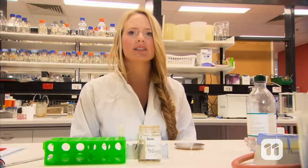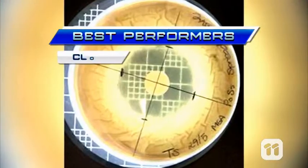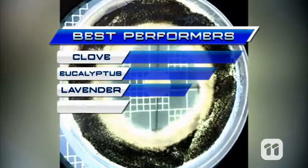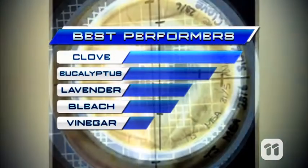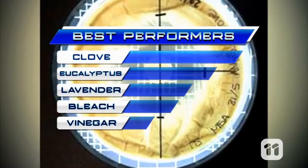After compiling our results, we made some pretty surprising discoveries. The clove, eucalyptus and lavender outperformed the vinegar and bleach, with clove being the best performer, proving effective against all the types of fungi tested.